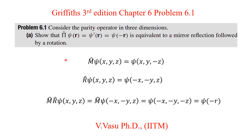Now we will see how far this is true. Let us take the mirror operator M-hat, which acts on wave function psi of X, Y, Z. Let us say we are taking the mirror image along the X-Y plane. Then naturally the Z coordinate will change — Z will become minus Z, producing the reflection along the Z axis in the negative direction.